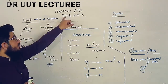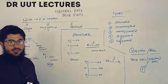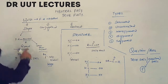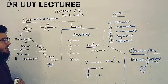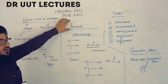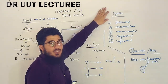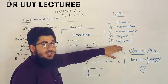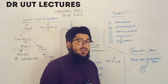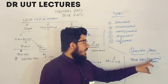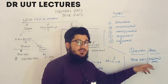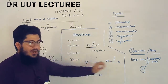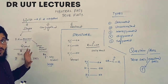In today's tutorial we will talk about the neutral fats or true fats. The points we'll cover are: first, the classification of the lipids; second, the structure of the neutral fats or true fats; third, the types — saturated, unsaturated, monoglyceride, diglyceride, and triglycerides. At the end we'll answer the question: why are true fats also known as neutral fats?